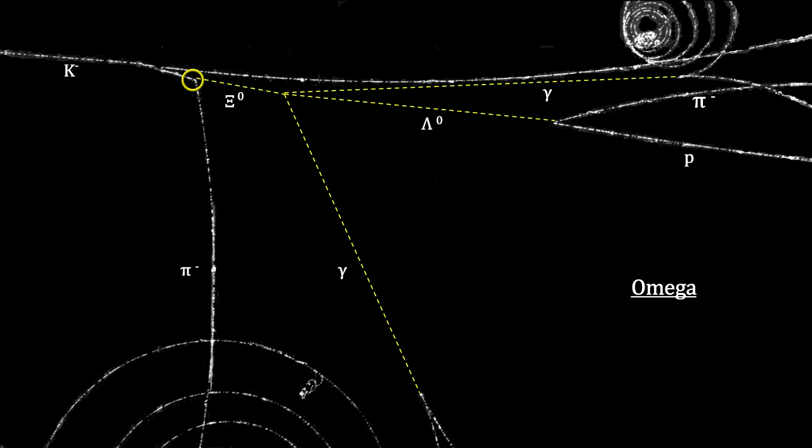Given all the masses, energies, strangeness, and charges involved, this fit the expected properties of the omega particle that's made up of three strange quarks.